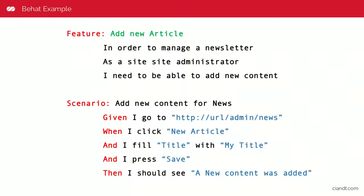How can you identify which steps are available to use? You can start Behat from scratch and it gives you just the skeleton to build your PHP coding behind the scenes, which then maps to this natural language. You can use extensions — we're going to use Drupal Extension, which gives you by default a lot of ready-to-use functionalities, so you can just define and start to automate your tests.